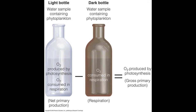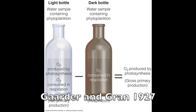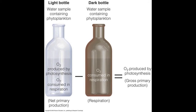A famous application of Winkler titration is the light bottle-dark bottle experiment. This experiment was first performed in 1927 by Gardner and Grand. In this experiment, biologically active water is sealed in a light bottle and also in a dark bottle. In the light bottle, the sun can reach the water, so both respiration and photosynthesis take place. In the dark bottle, no sunlight reaches the water, so only respiration takes place. By measuring the dissolved oxygen concentration of each bottle, the oxygen produced by photosynthesis can be determined.